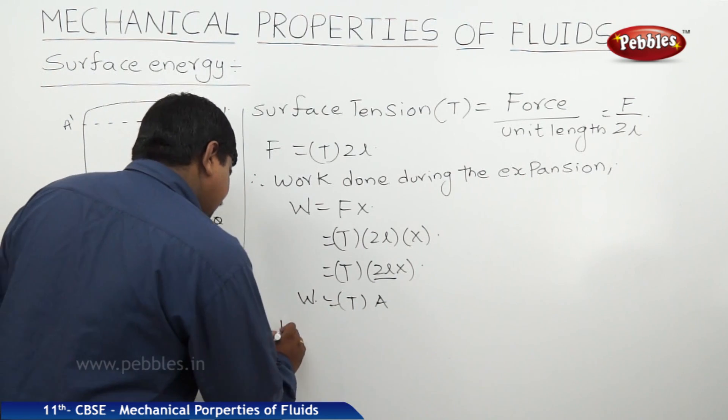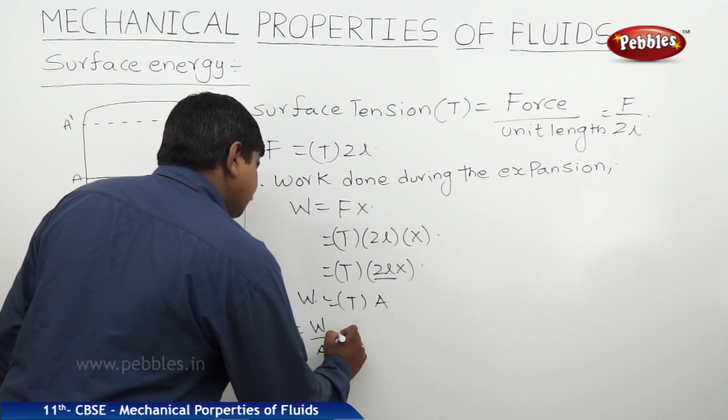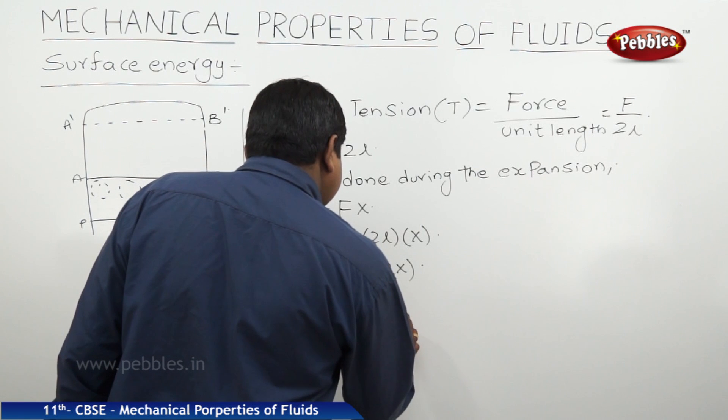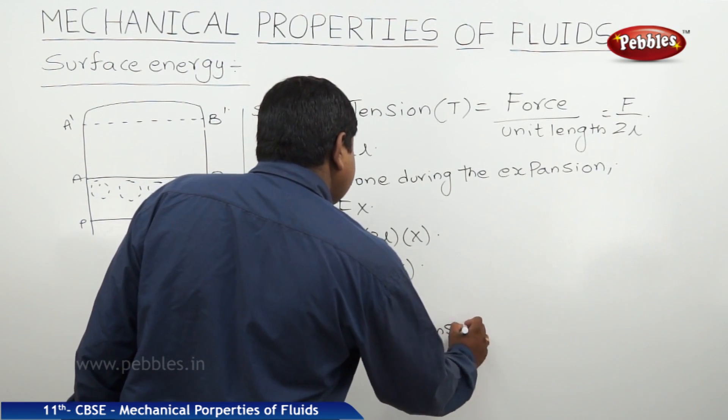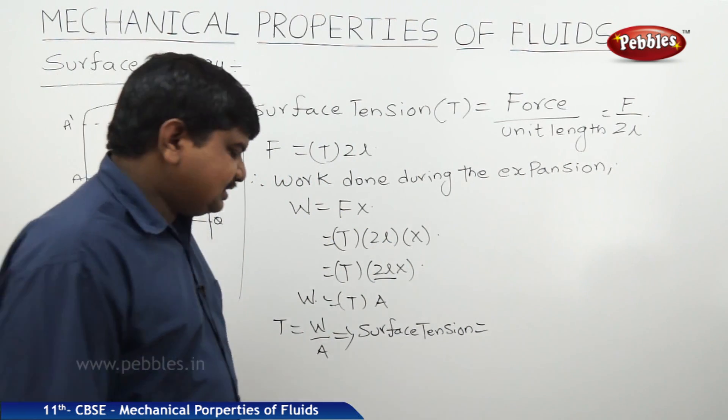From this, T is equal to W by A also. This refers to surface tension is equal to work done on unit surface area.